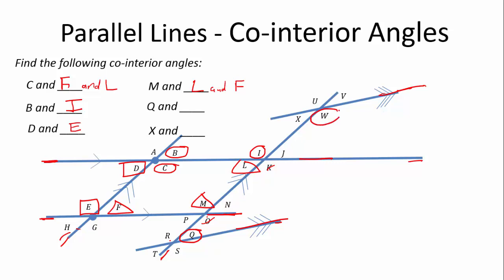So, we have Q and W. They're co-interior if you ignore all the other lines. So, Q and W. And then X, again, you've got to ignore all the other lines and R. So, it'll be X and R.